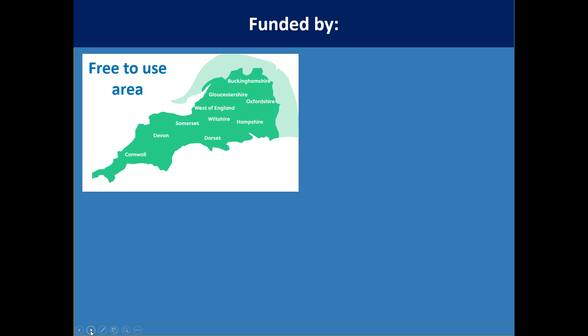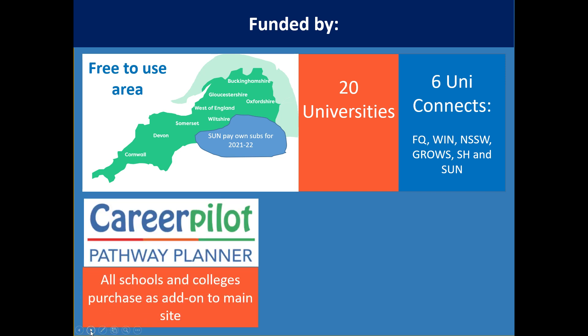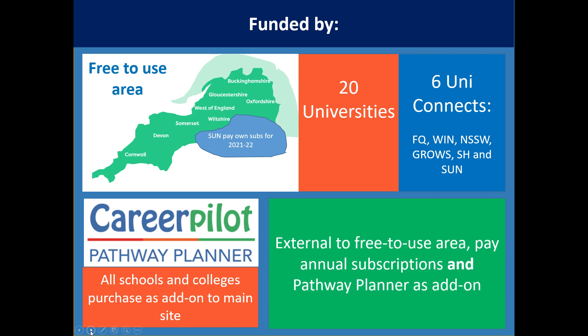Just to explain a little bit about funding: in this geographical area Career Pilot has been completely free to use because it's funded by 20 universities and six UniConnect projects. For 2021-22 there's a slight change with the Sun UniConnect — they've given the funding directly to schools to pay their own subscriptions, but in the rest of that green area Career Pilot is free to use across all four zones. If you want to add the Pathway Planner on, it costs £250 per year as an add-on. If you're outside our region you pay for Career Pilot and the Pathway Planner.